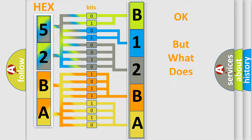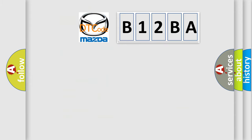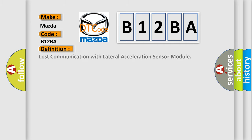We now know how the diagnostic tool translates the received information into a more comprehensible format. The number itself does not make sense if we cannot assign meaning to what it actually expresses. So, what does the diagnostic trouble code B12BA interpret specifically for Mazda car manufacturers? The basic definition is: Lost communication with lateral acceleration sensor module.